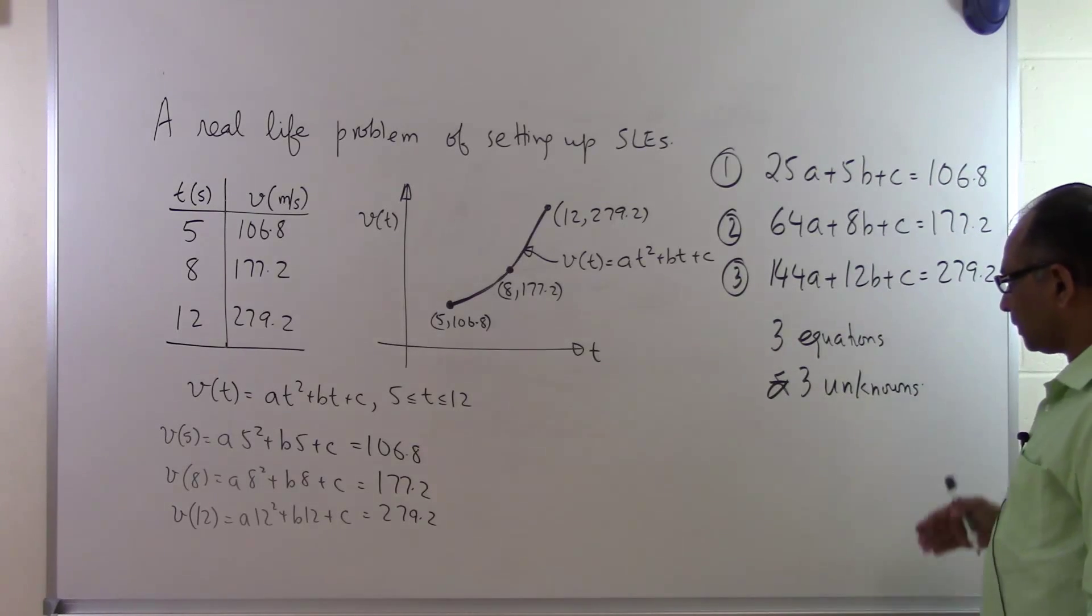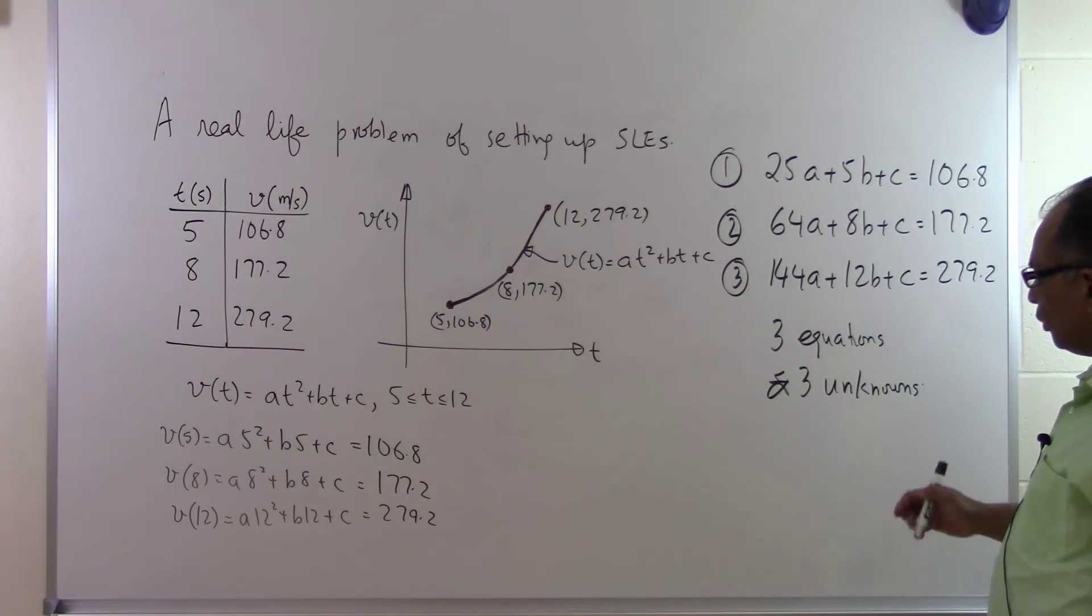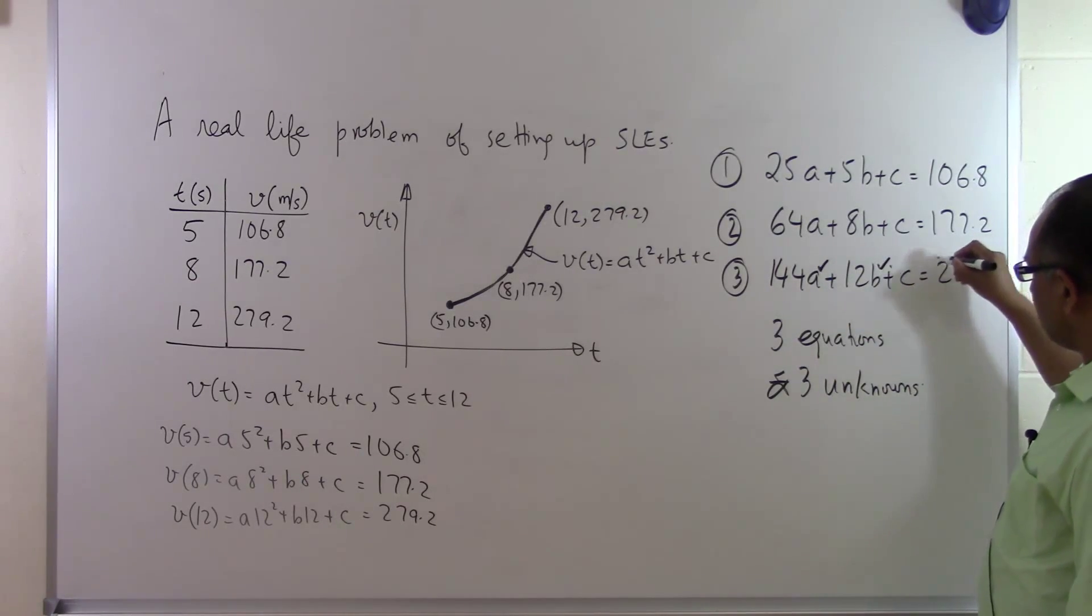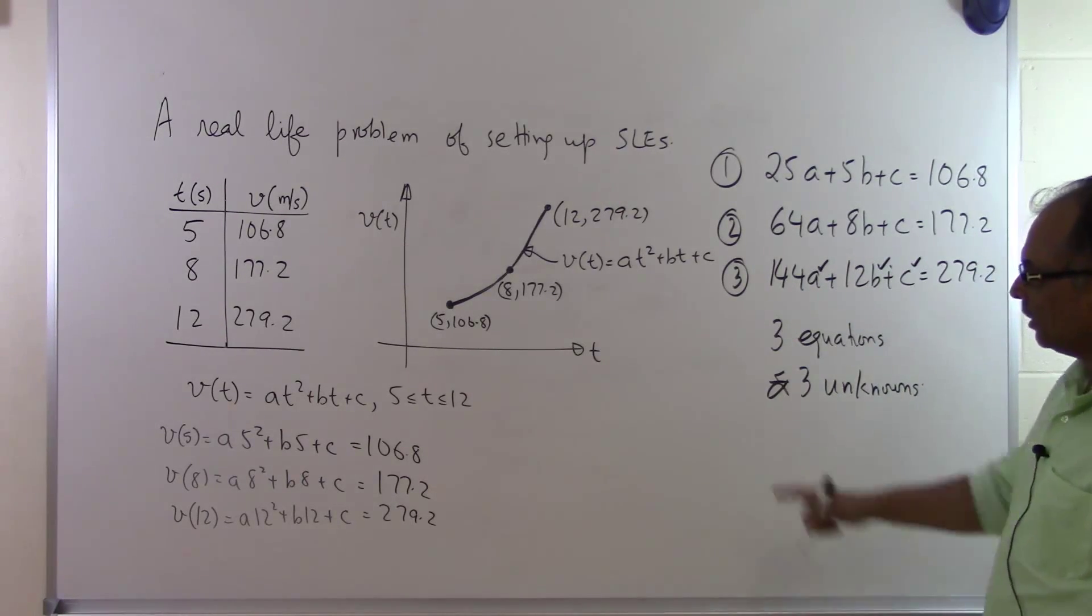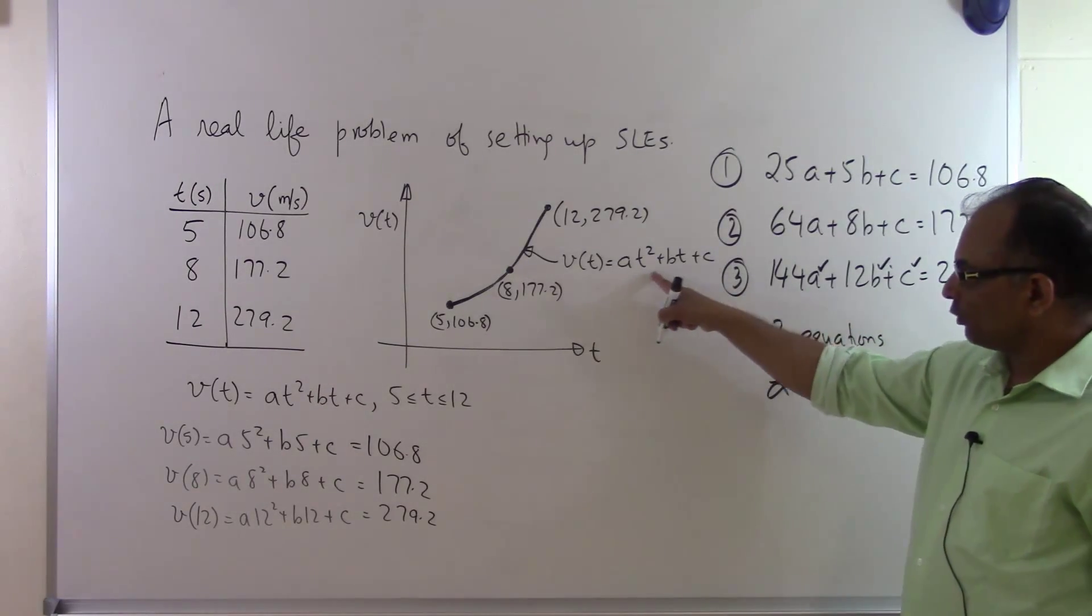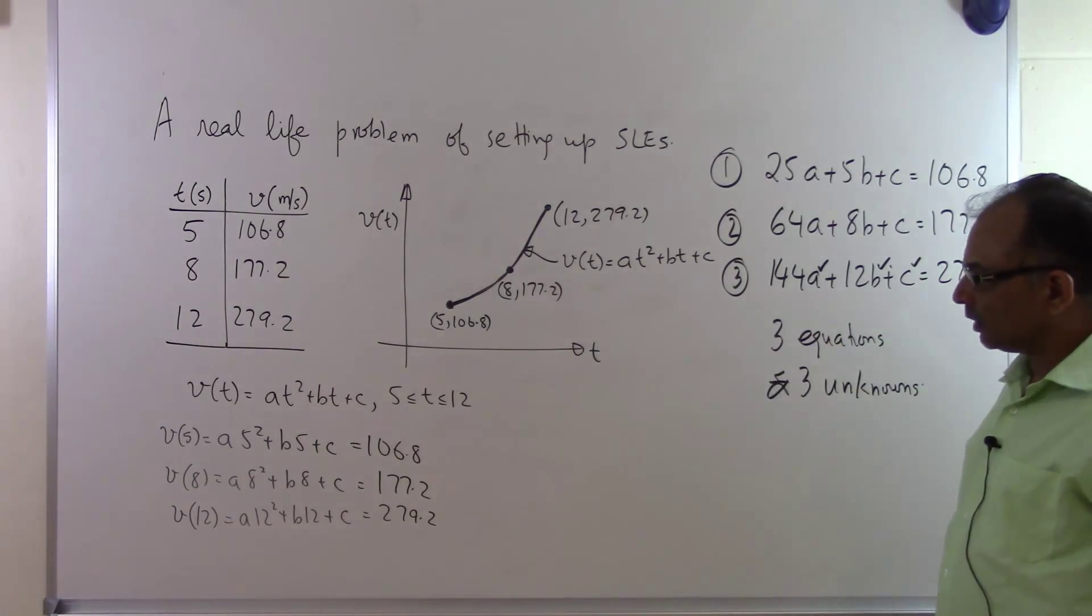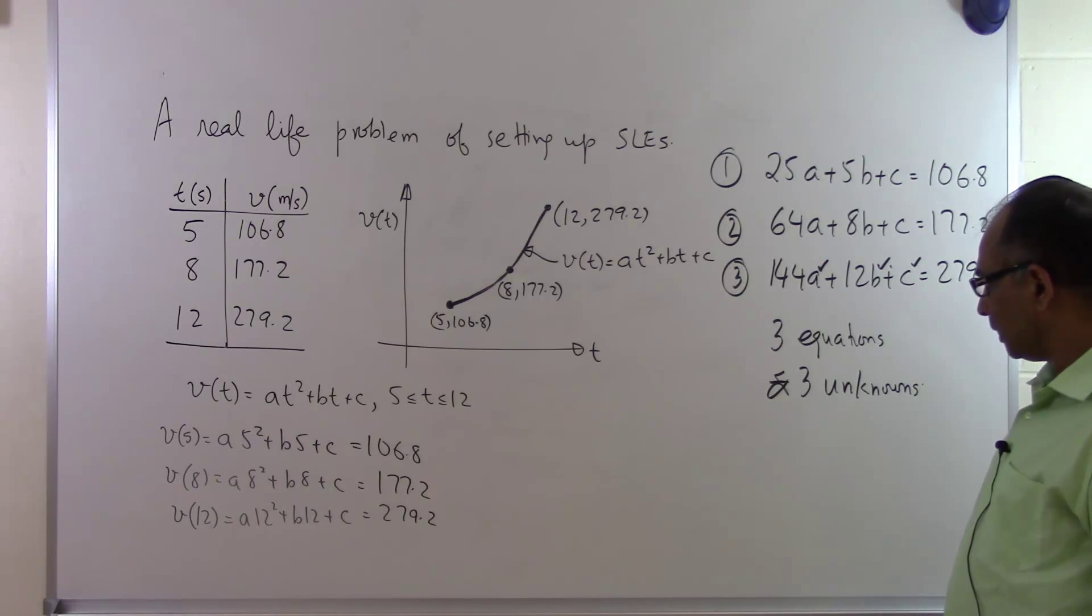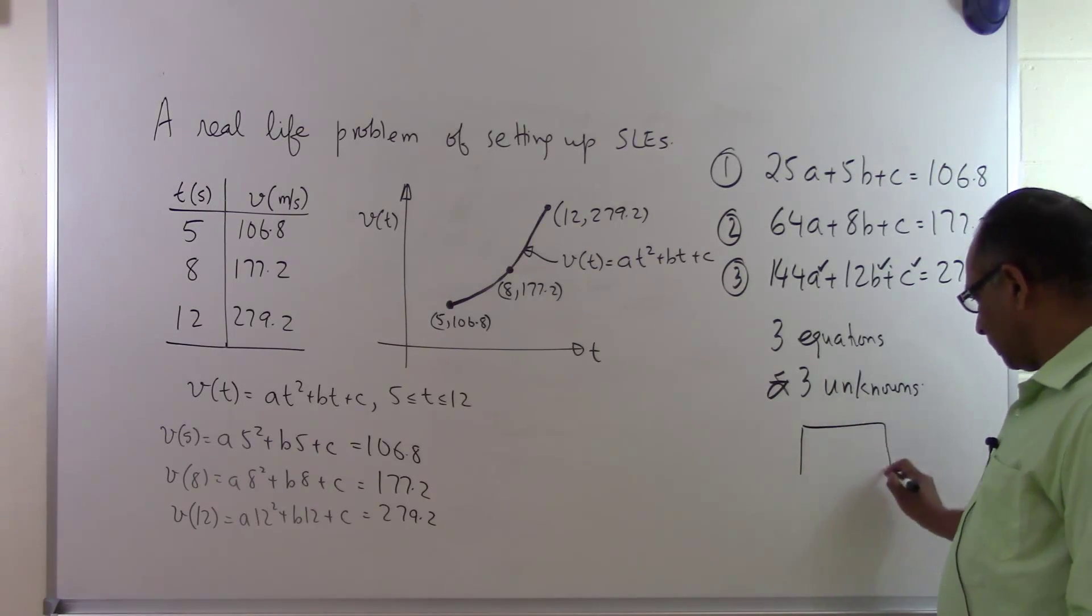If we are able to solve these three simultaneous linear equations, we will be able to find the values of a, b, and c. Once we know what the values are, we have the velocity profile from t = 5 to t = 12. Hence we will be able to find the approximate value of the velocity at any other time other than 5, 8, and 12 which is already given to us. And that is the end of this segment.